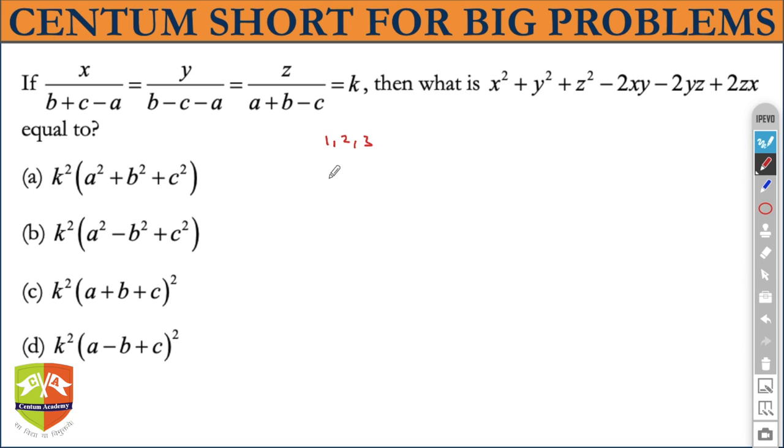So x upon five minus one, four equal to y upon, clear, or not. This became four to minus two equal to z upon one two three zero equal to k.